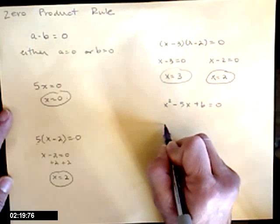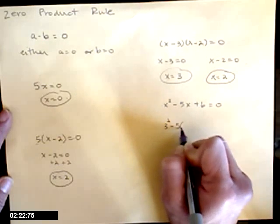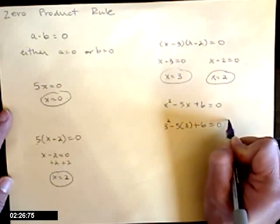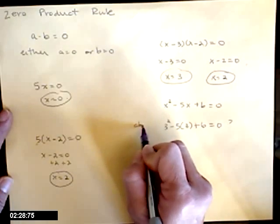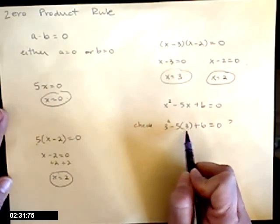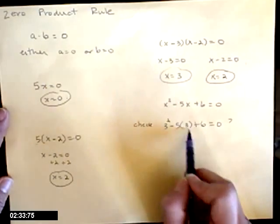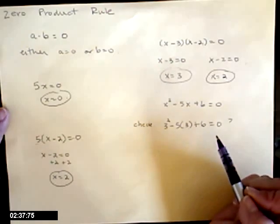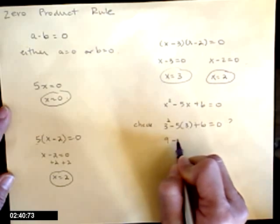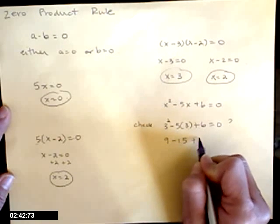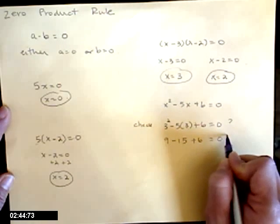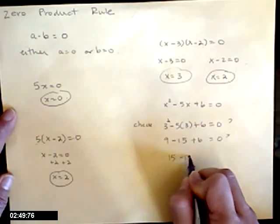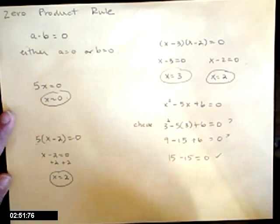So let's plug in the 3. So 3 squared minus 5 times 3 plus 6, is that equal to zero? This is my check. Notice that I've used the same x value, the same number in all of my x positions. You can't do 3 and 1 and a 2 and other. It's not going to work that way. So now I get 9 minus 15 plus 6. Is that equal to zero? Well, sure it is. That's 9 plus 6 is 15, minus 15 equals zero.